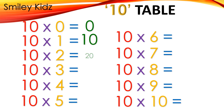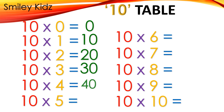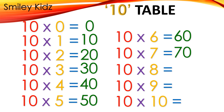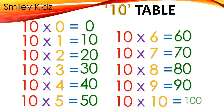Table 10: 10×0=0, 10×1=10, 10×2=20, 10×3=30, 10×4=40, 10×5=50, 10×6=60, 10×7=70, 10×8=80, 10×9=90, 10×10=100.